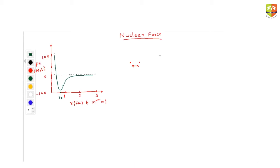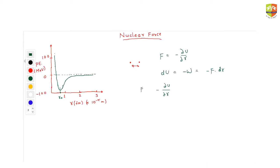Remember that the relation between force and potential energy is F = -dU/dr. We define potential energy as the negative of work done by the field: -F·dr. If you consider displacement only in the direction of force, the full derivative becomes a partial derivative, so F = -dU/dr. This is the relation we will use.